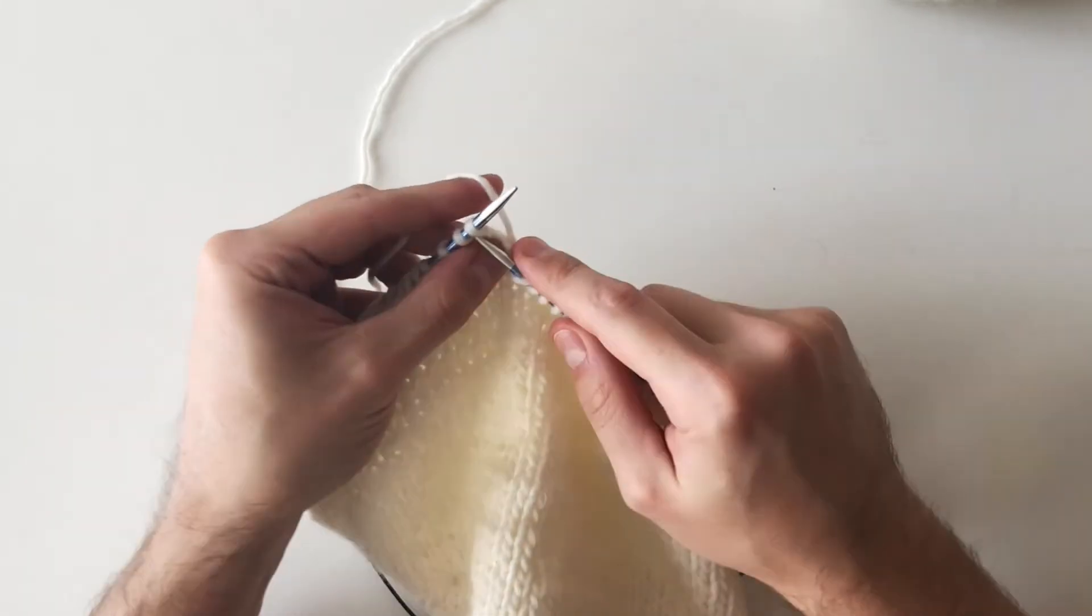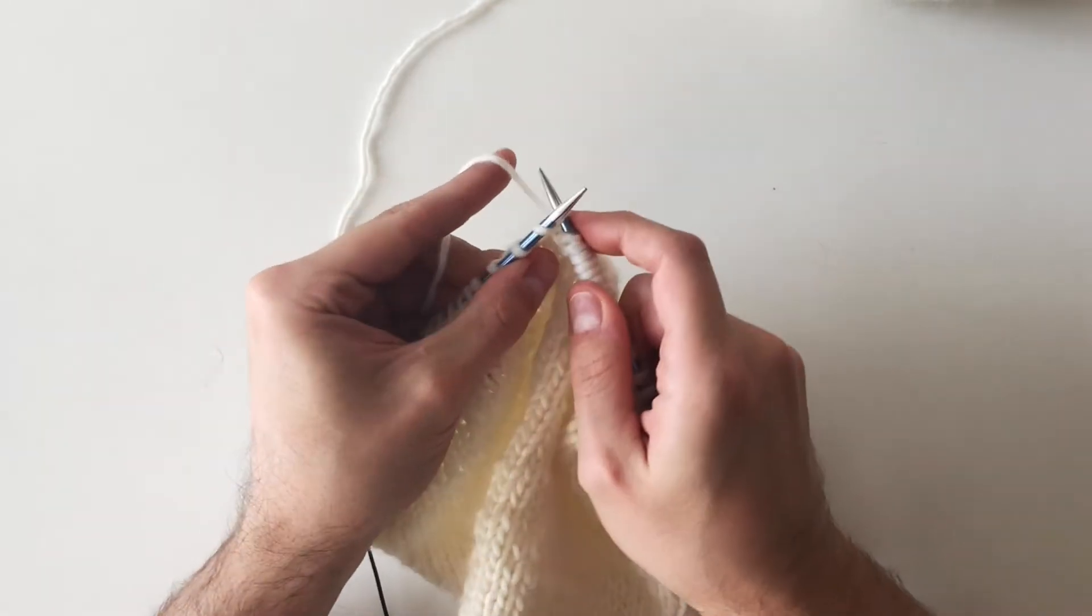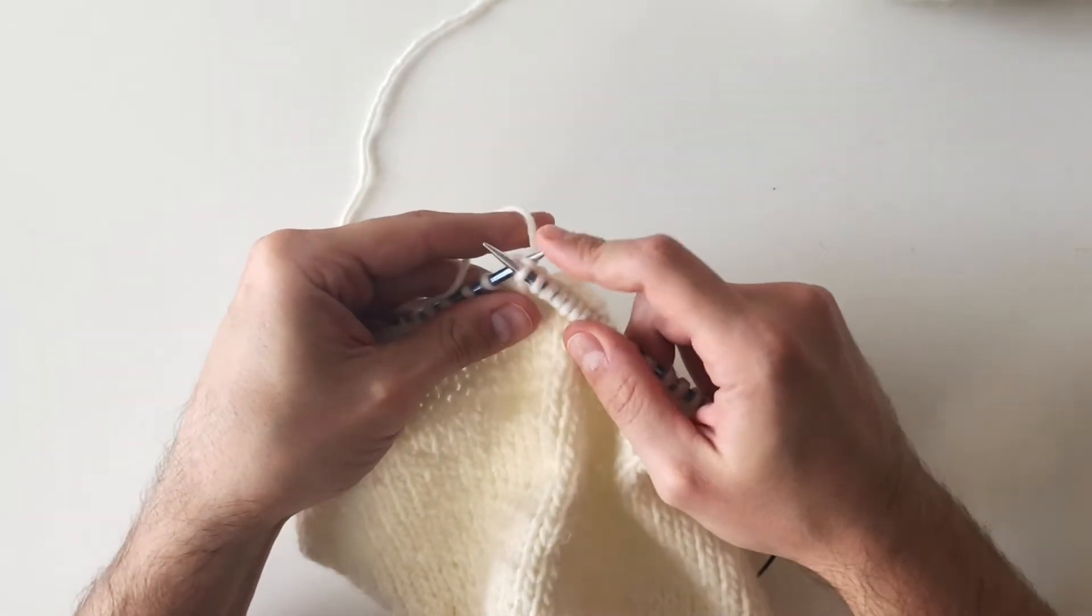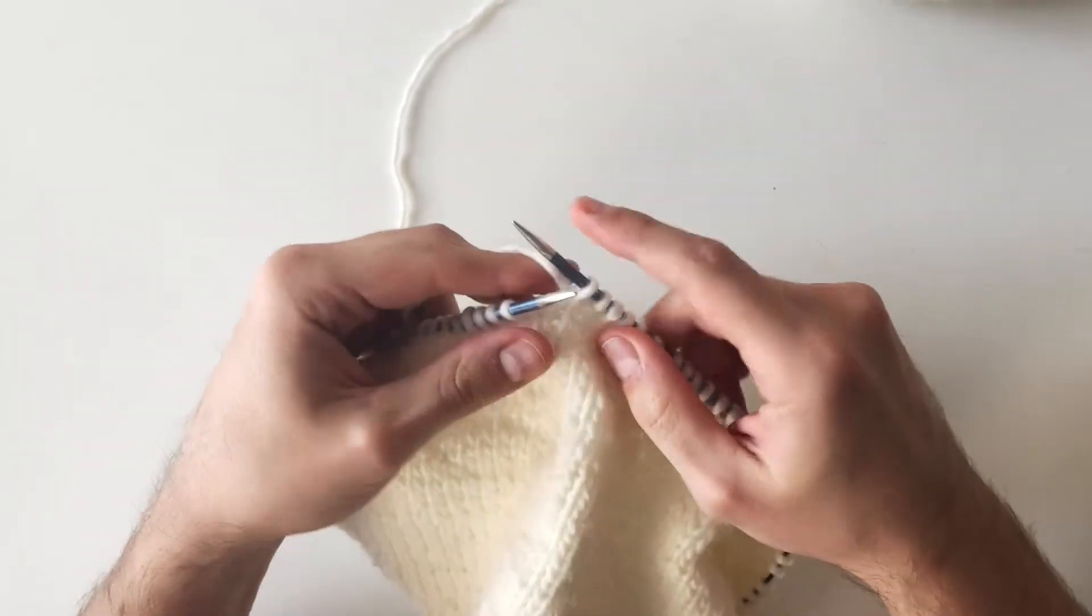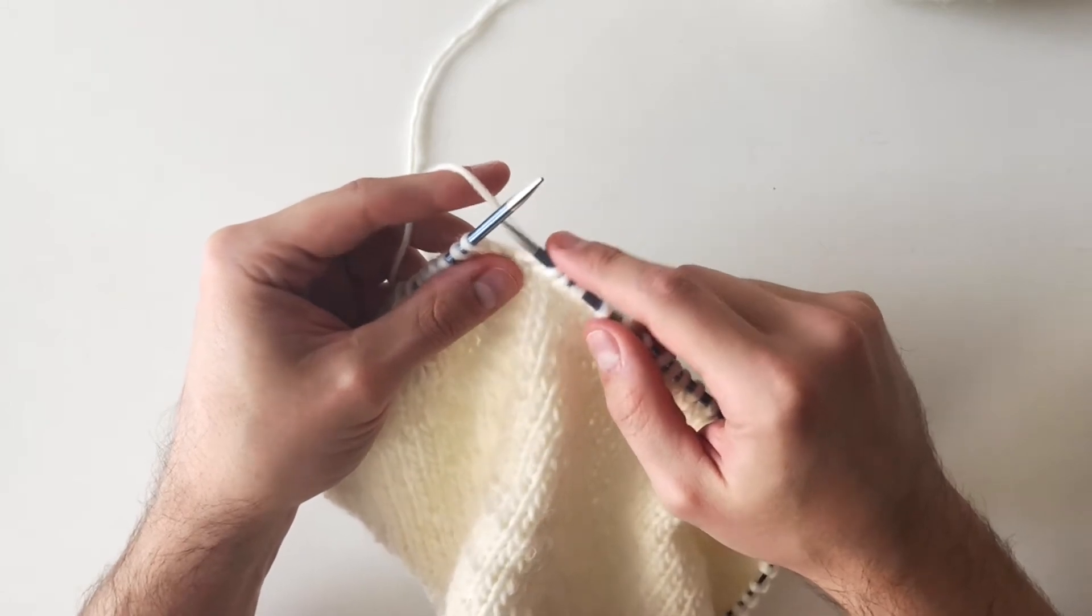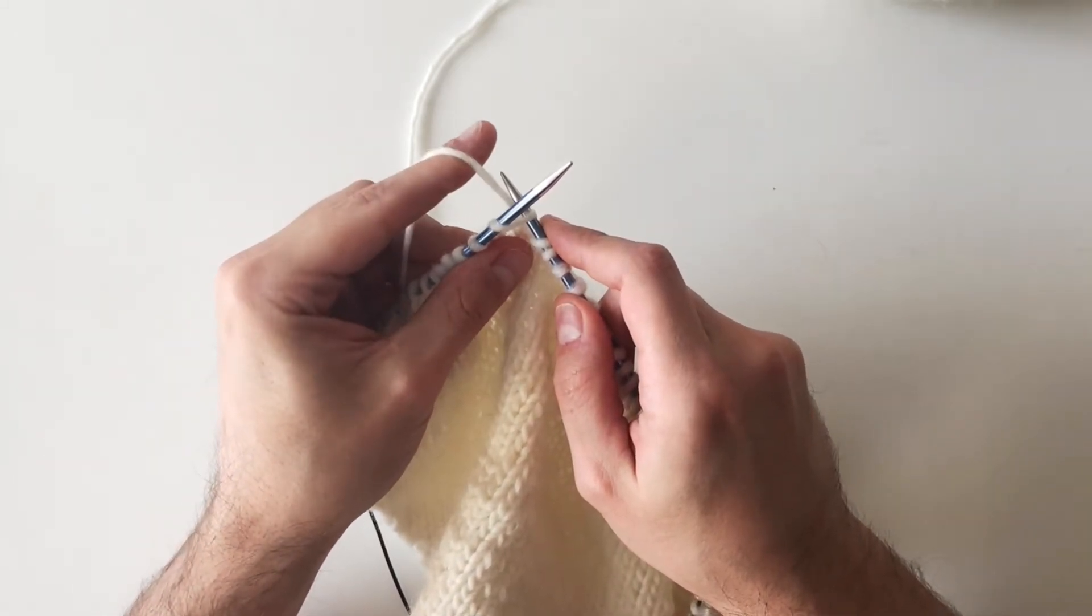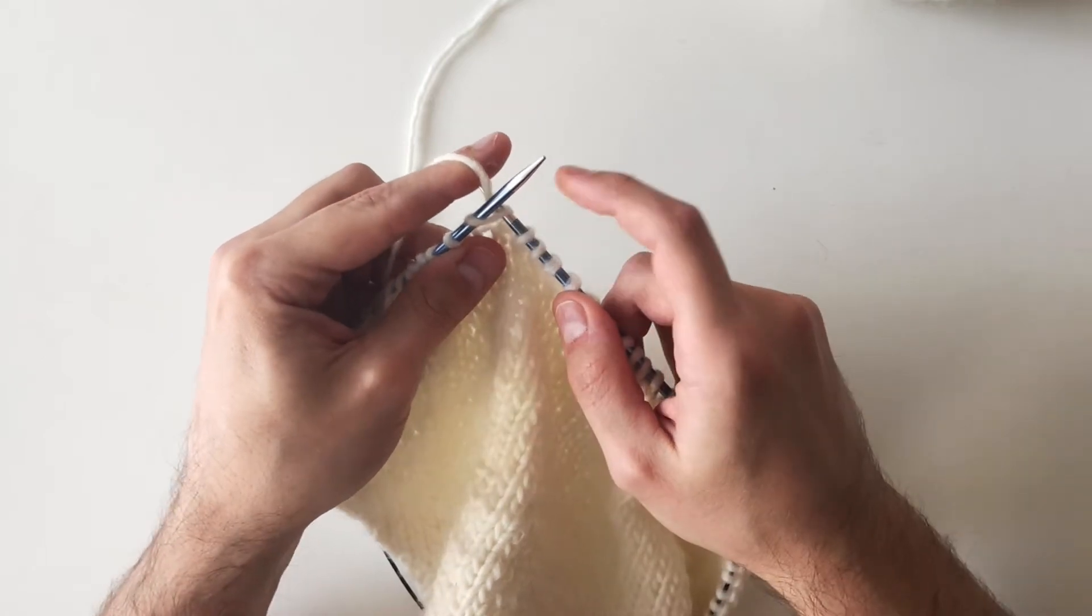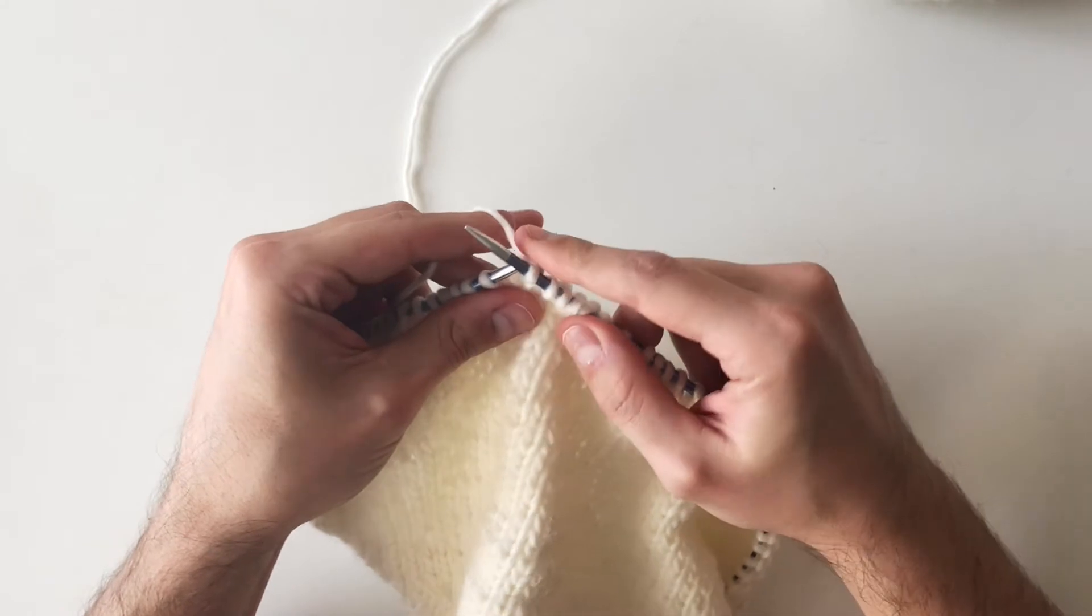Of course, you can help the yarn reach the needle by moving your index finger a little bit. So you insert, you move your index finger a bit forward so that the needle can catch the yarn, bring it through the stitch, and then drop it.